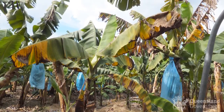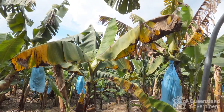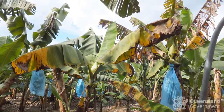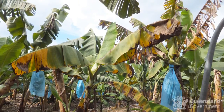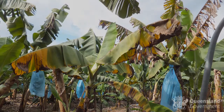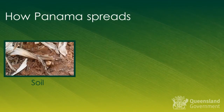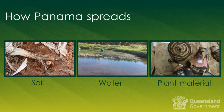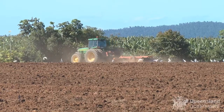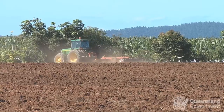Discoloration may not always be immediately visible with early disease infections. Infected plants will rarely produce a marketable bunch, and the additional stress of producing a bunch usually exacerbates the symptoms. The fungus that causes Tropical Race 4 produces spores that can be transported in soil, water, and plant material.